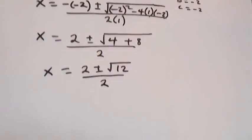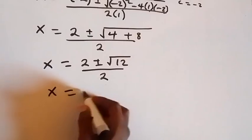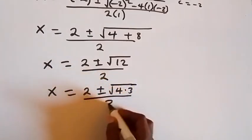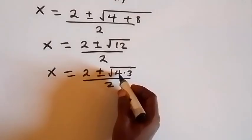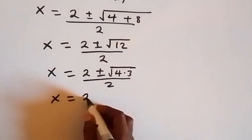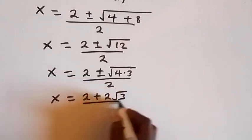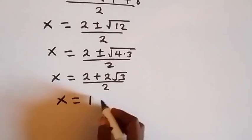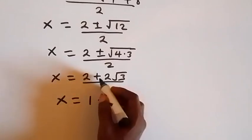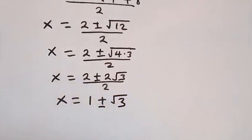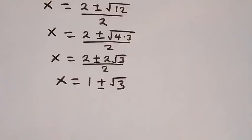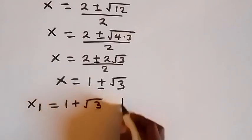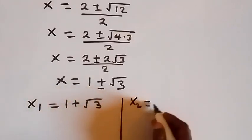Root 12 can be separated as root of 4 times 3, which is 2 root 3. So x equals 2 plus or minus 2 root 3, over 2. Dividing through by 2 gives x equals 1 plus or minus root 3. So x3 equals 1 plus root 3, and x4 equals 1 minus root 3.